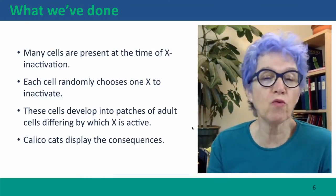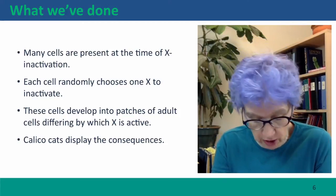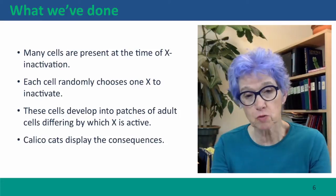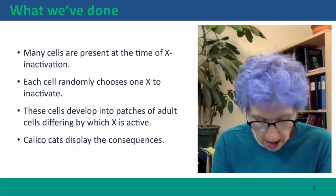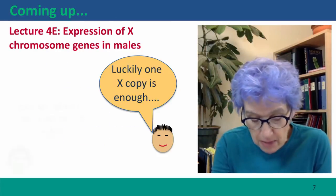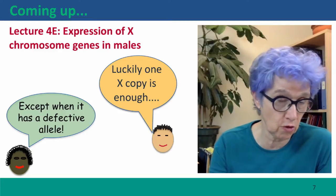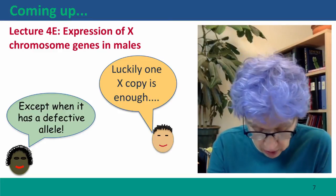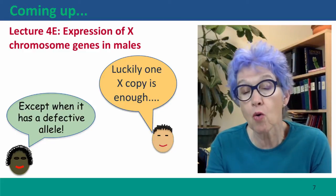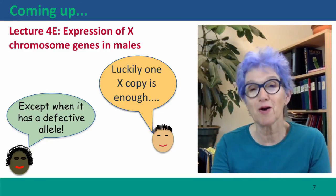So what we've done is simply taken the concept introduced in the previous lecture and made it more concrete by dealing with a specific example — that of the calico cat. Coming up next, we're going to look at the other side of the differences in X chromosomes between males and females: the problem in males that arises from having only one copy of all the genes on the X chromosome. I hope to see you there.